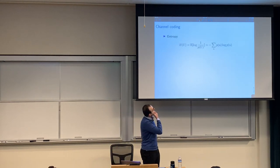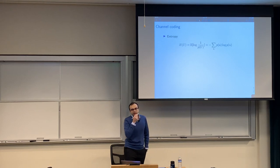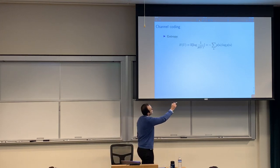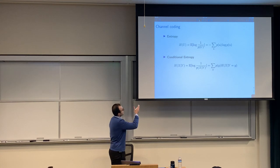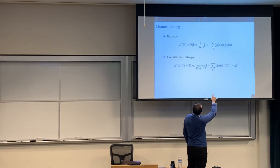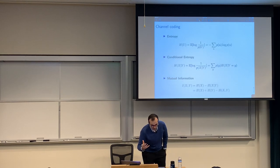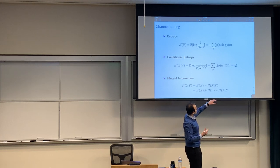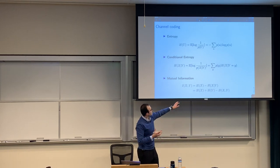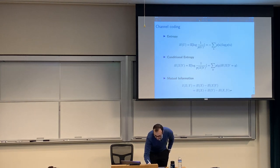Let's recall some basic definitions. The entropy is the expected surprise of the random variable — you can write it for discrete random variables. Conditional entropy is H(X|Y), which is a weighted sum of conditional entropy terms weighted by the probability of Y. Using these two, we define mutual information, which is absolutely central here. The mutual information between X and Y is how much the uncertainty about X is reduced by knowing Y, which equals total entropy minus conditional entropy. Mutual information is also symmetric: I(X;Y) = I(Y;X).